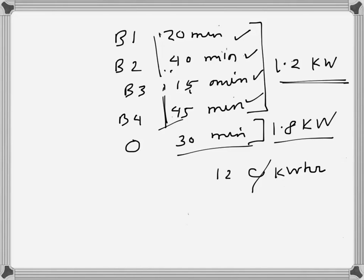1.2 is the rating, so if we add up the minutes: 20 minutes plus 40 minutes is 60 minutes, one hour. Then again, 15 plus 45 is another hour. So there are two hours there. I will multiply by two for the burners.